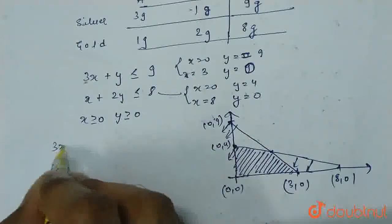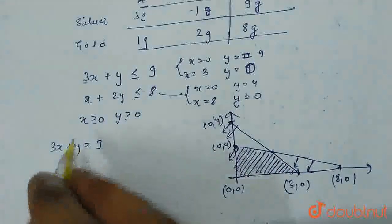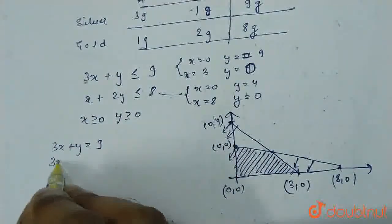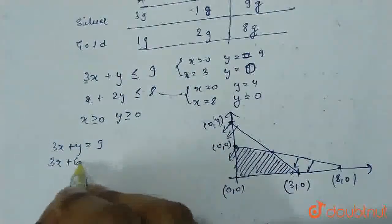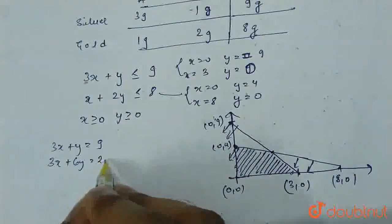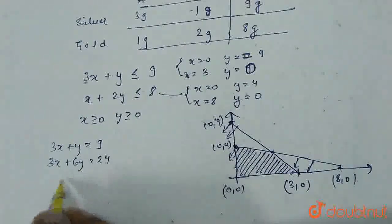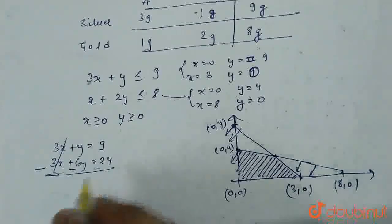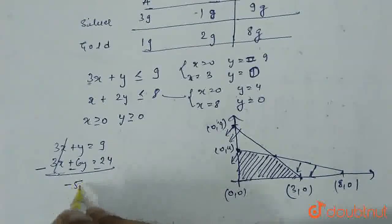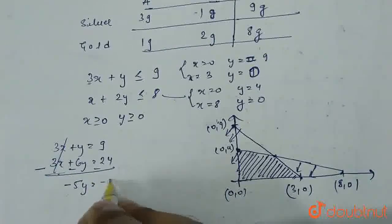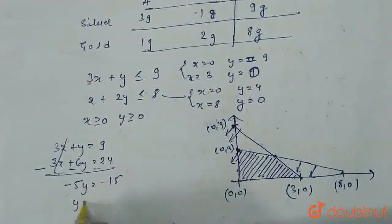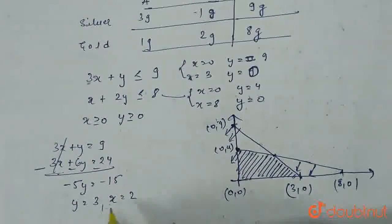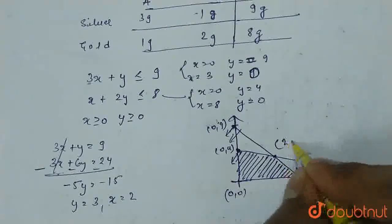Write the equations as 3x plus y equals 9 and x plus 2y equals 8. Multiply the second equation by 3 to get 3x plus 6y equals 24. Subtracting, 3x cancels out, giving minus 5y equals minus 15, so y equals 3. Substituting y equals 3 into either equation gives x equals 2. So the coordinates of the fourth corner point are (2, 3).